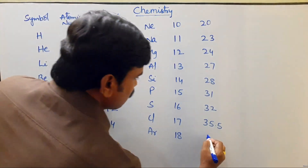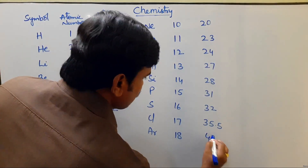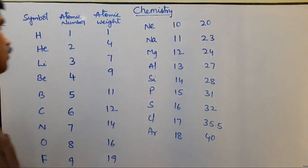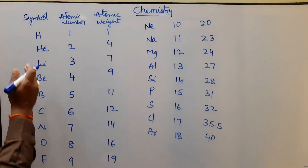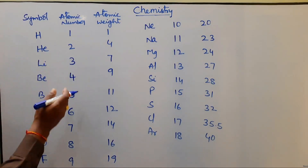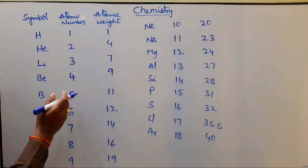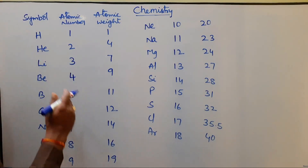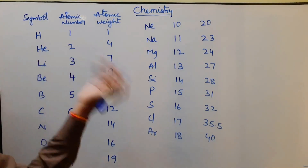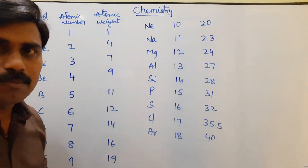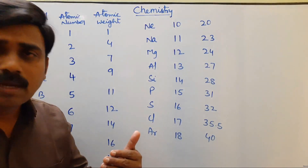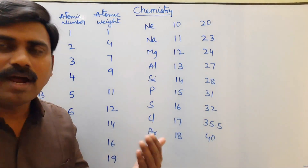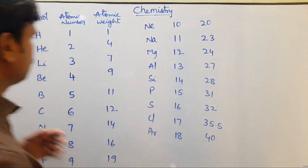The eighteenth element is Argon, its atomic weight is forty. Looking at elements one to eighteen, some elements' atomic weights come by doubling the atomic number, and some elements' atomic weights come by doubling the atomic number and adding plus one.